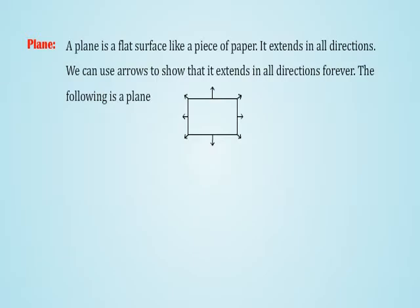Plane: A plane is a flat surface like a piece of paper. It extends in all directions. We can use arrows to show that it extends in all directions forever. The following is a plane.